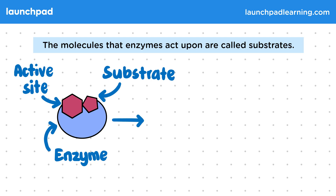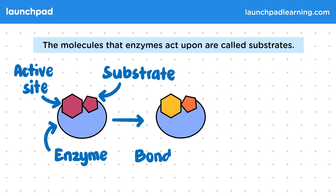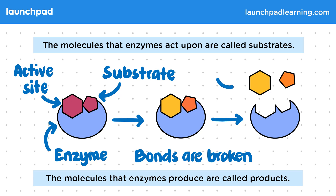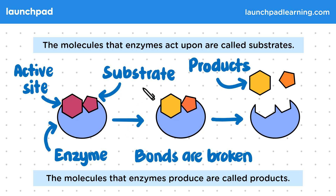This means that the substrate is able to bind to the enzyme. When this happens, the enzyme breaks bonds down within the substrate to produce new molecules from the original substrate molecule. The molecules that enzymes produce are called products. Once the reaction is complete, the products are released from the active site. This means that the enzyme is freed up to go back to the start of the cycle and bond to substrate again.